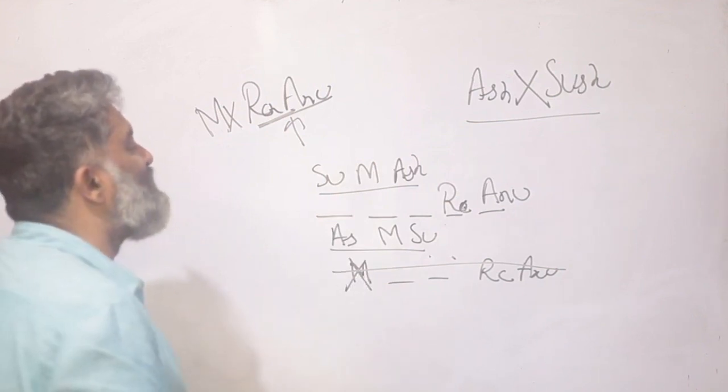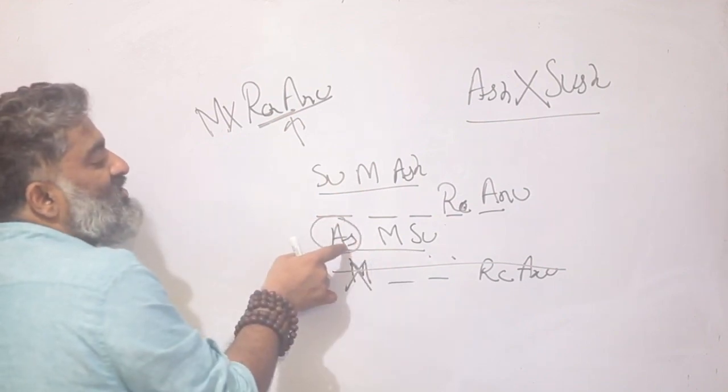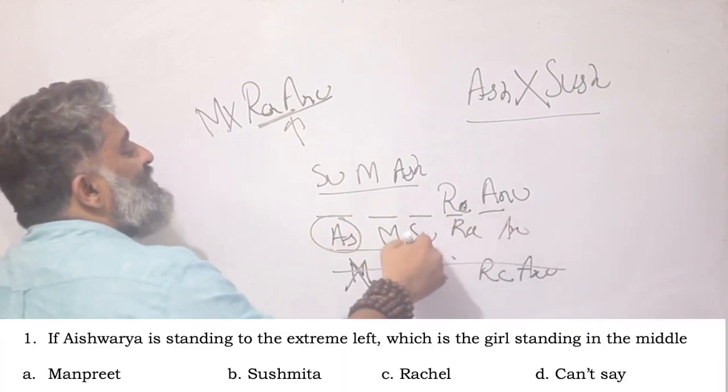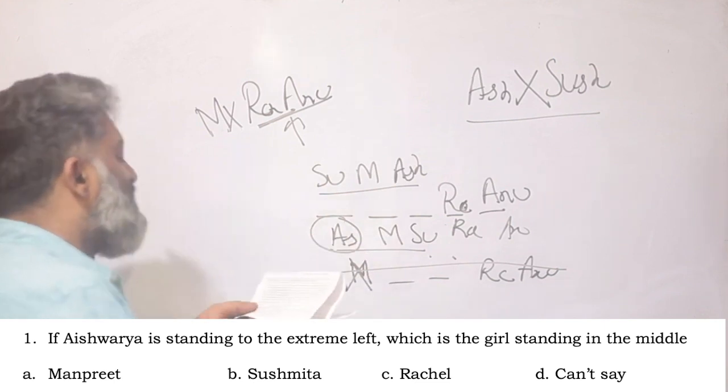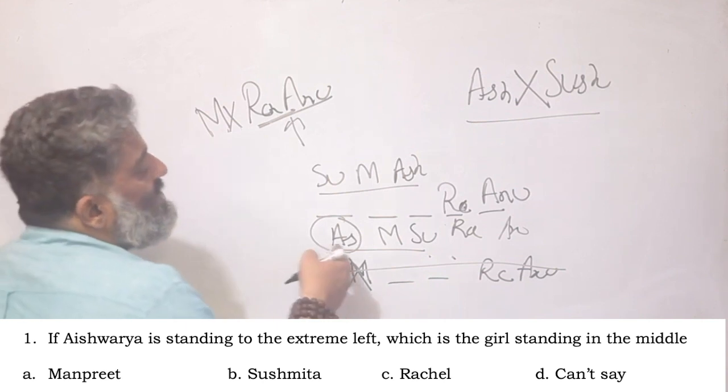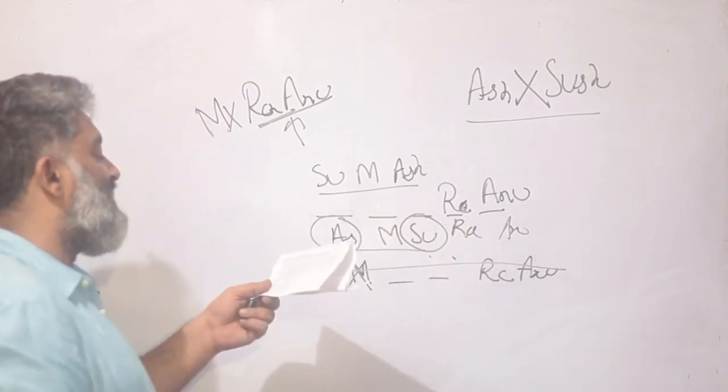So now I have only two possible scenarios and let me try and move towards the question. It says if Aishwarya is standing to the extreme left. Aishwarya is standing to the extreme left in this particular story. What is the story? Anu, Rachel, Sushmita, Manpreet, and then Aishwarya. So if Aishwarya is standing to the extreme left, who is the girl standing in the middle? Middle is Sushmita in this particular story and that would be my answer.